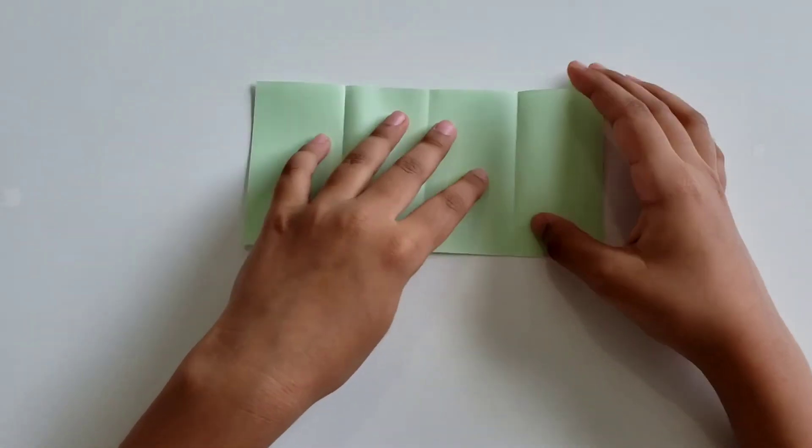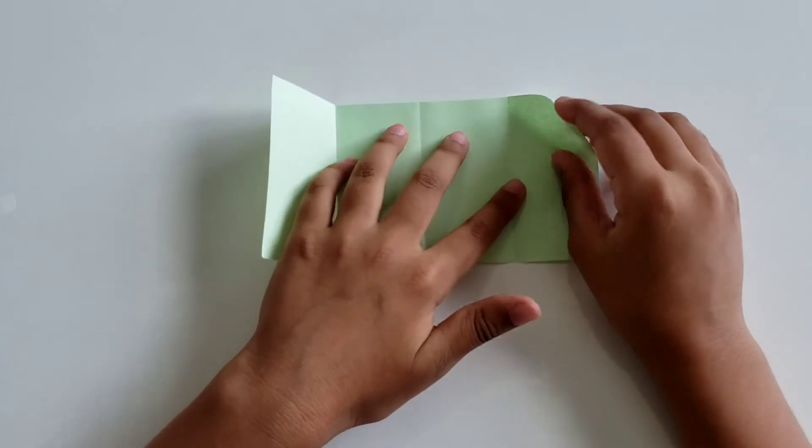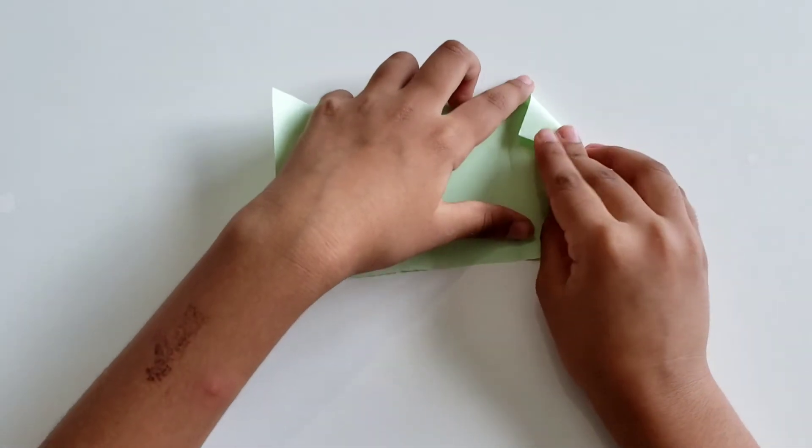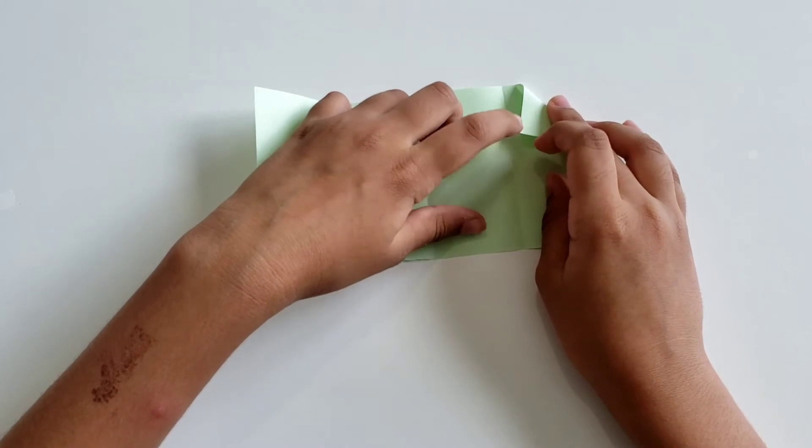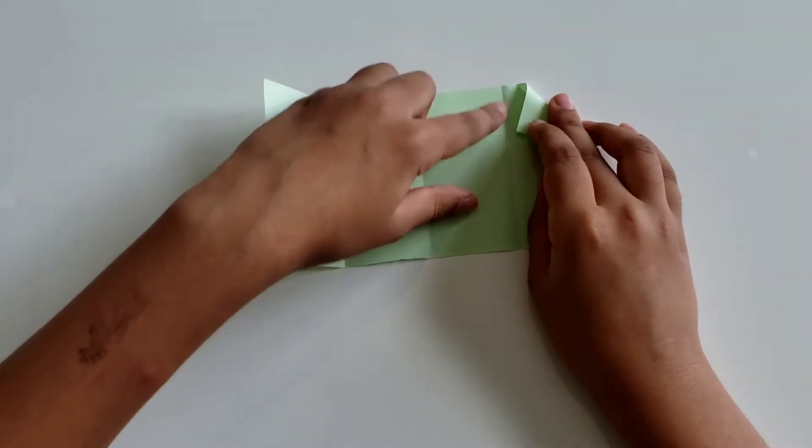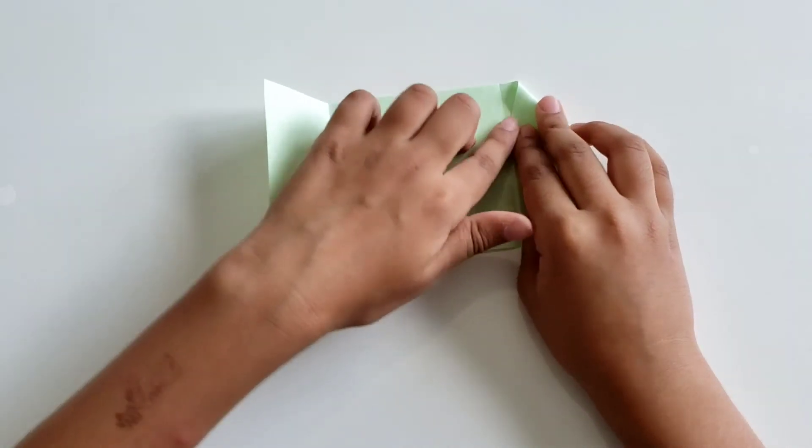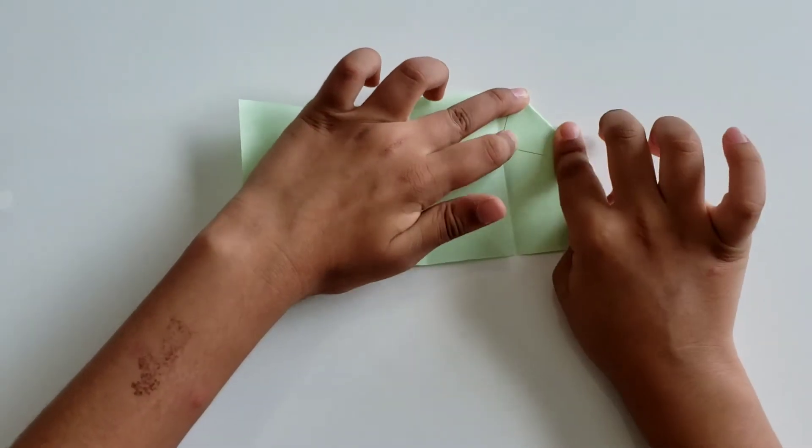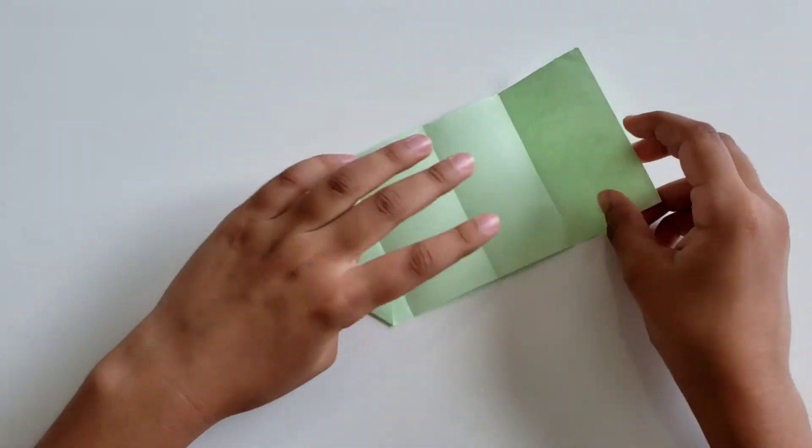Open it up and then you will take one corner and fold it diagonally so that the point touches this crease. Crease well. Do it on this side too.